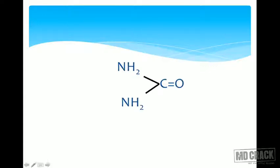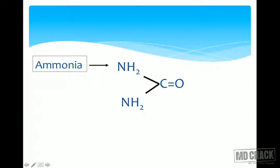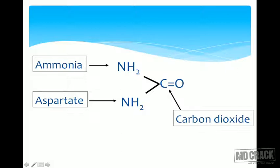Before going further, let's look at the structure of urea: one carbon with a double-bond oxygen and two amino groups (NH2). One amino group comes from ammonia and one comes from aspartate; the carbon comes from carbon dioxide. Ammonia is released by glutamate dehydrogenase from glutamate; aspartate also comes from glutamate (glutamate is converted to aspartate), contributing the second amino group.